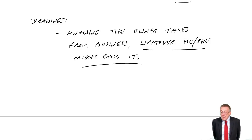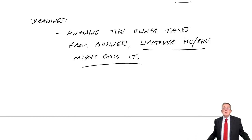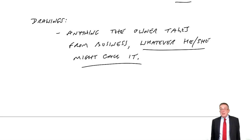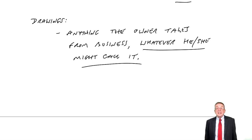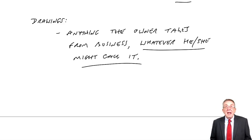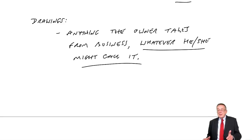Secondly, this is somewhere where you might be tricked in the exam. It's whatever he or she might call it. A lot of people with a small business — perhaps my mother owns a shop. She's not an accountant, but she buys things, she sells things. She needs money to live on, so perhaps she says, 'I'll take $100 a week for me,' and she says it's her wages. Well, she might call it wages, but it doesn't matter what she calls it — it isn't wages. Anything the owner takes is drawings. It doesn't matter that she calls it wages. Or she might say 'I've lent the business money, I'll pay myself some interest.' It doesn't matter — anything the owner takes is drawings. And it doesn't affect the profit, but it reduces the amount they're owed.